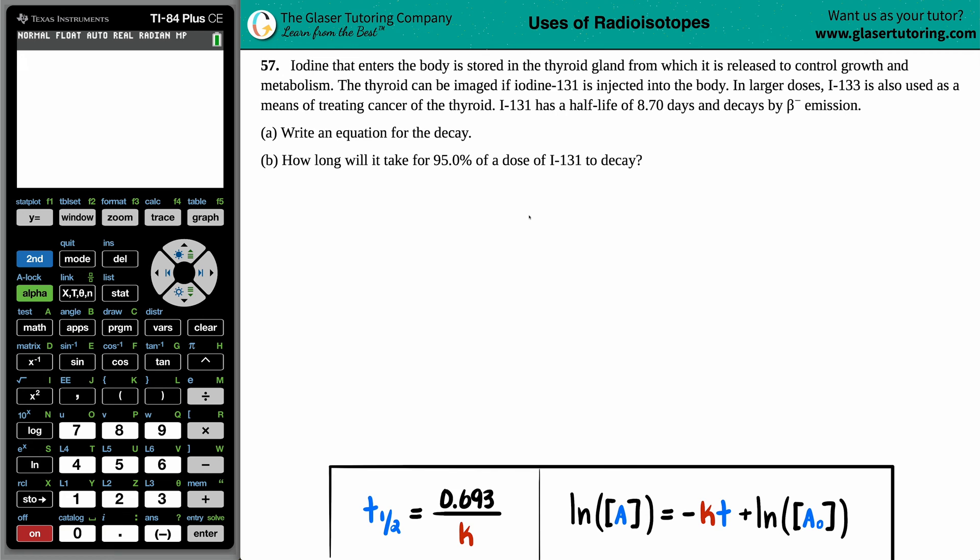Number 57. Iodine that enters the body is stored in the thyroid gland from which it is released to control growth and metabolism. The thyroid can be imaged if iodine-131 is injected into the body. In larger doses, I-131 is also used as a means of tracing cancer of the thyroid. Iodine-131 has a half-life of 8.70 days and decays by beta emission. Letter A, write an equation for this decay.